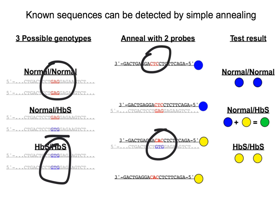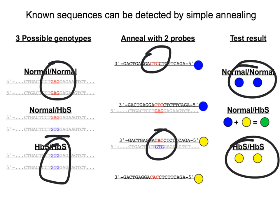If we anneal both probes to the sample and put a little dot of the patient's sample onto a piece of paper that will stick the DNA to it: if all we get is blue annealing and the yellow one doesn't anneal, that means we only have the normal version of that gene. If only the yellow probe anneals, that means we only have the hemoglobin S allele, and that person has sickle cell disease. If we get both blue and yellow annealing, both alleles are present and that person has sickle cell trait. That's how we can use two probes to determine the genotype at a specific locus.